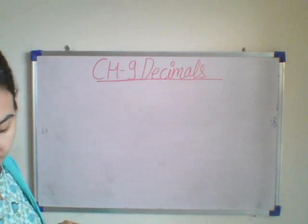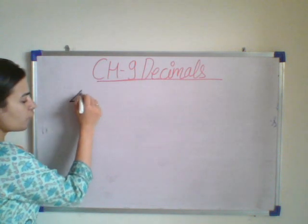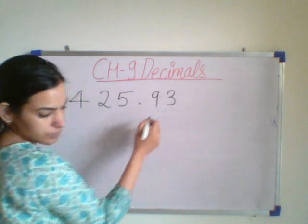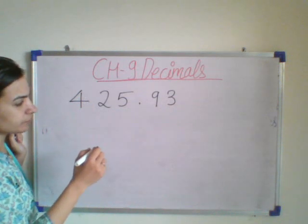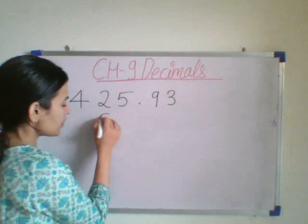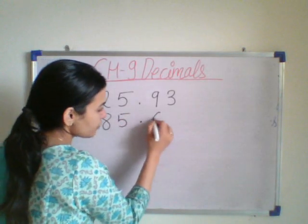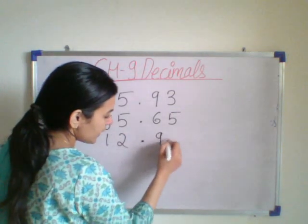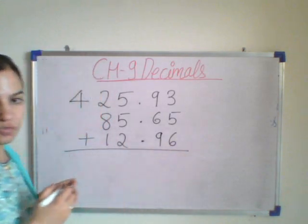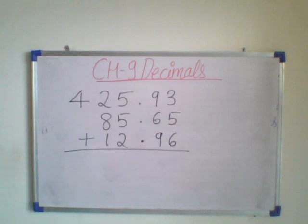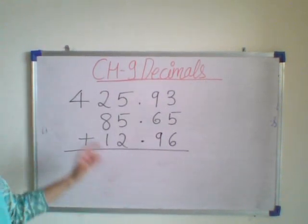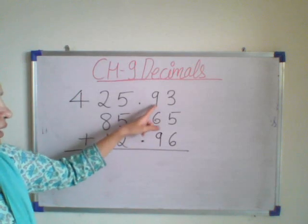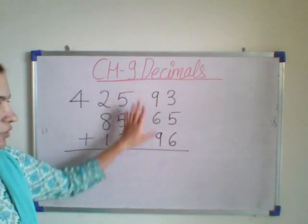Suppose in the question it is given we have to do the addition of 425.93, then 85.65, and the third number is 12.96. You have to add all 3 numbers. First, in the first step, you have to convert to like decimals. Here you can see these are like decimals because after the decimal two digits are there in all three numbers. So these are like decimals.